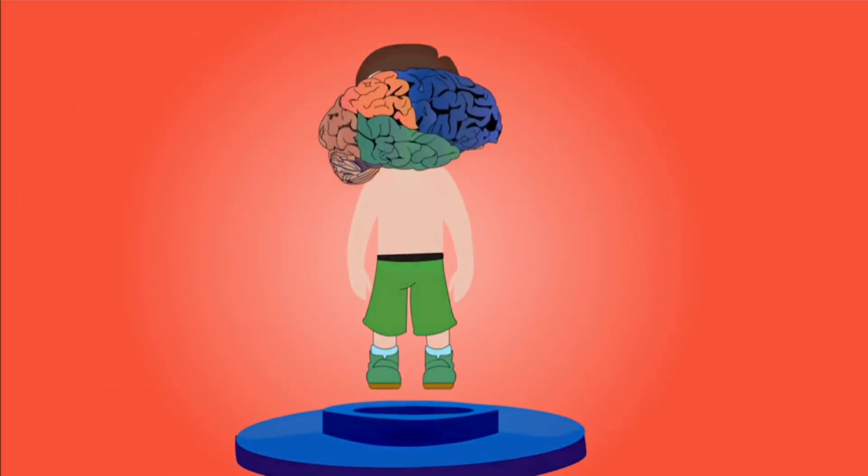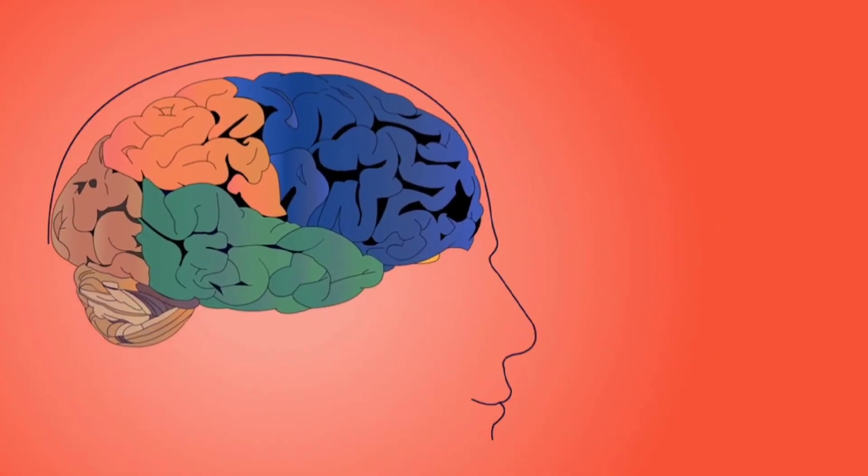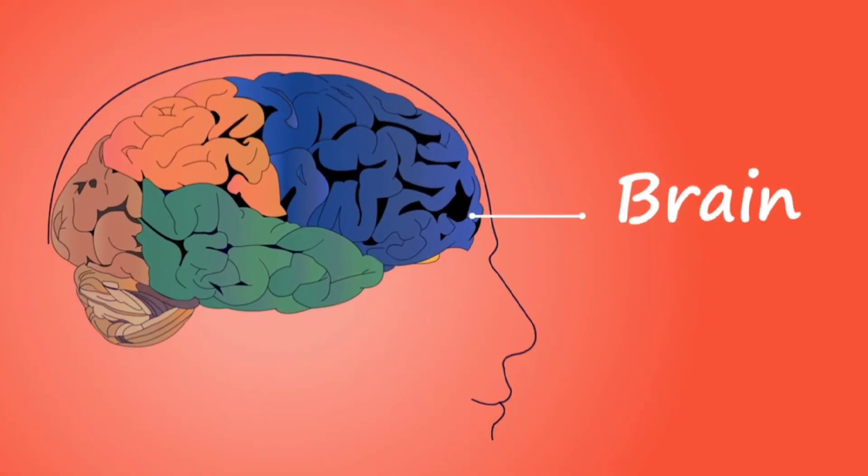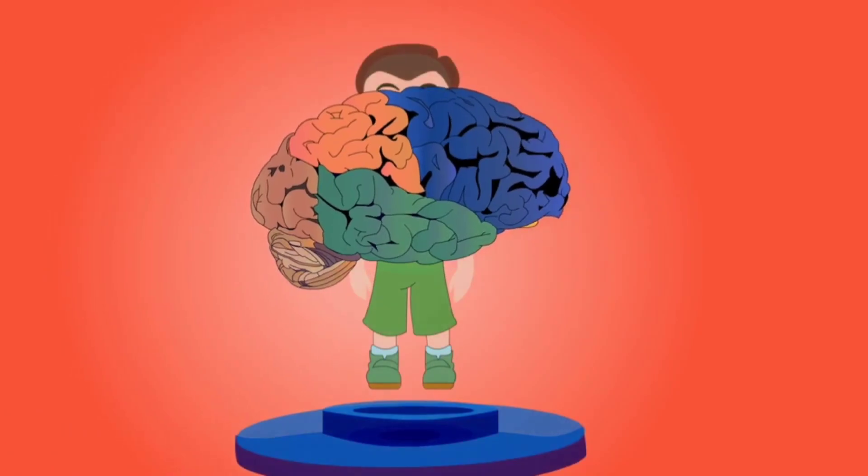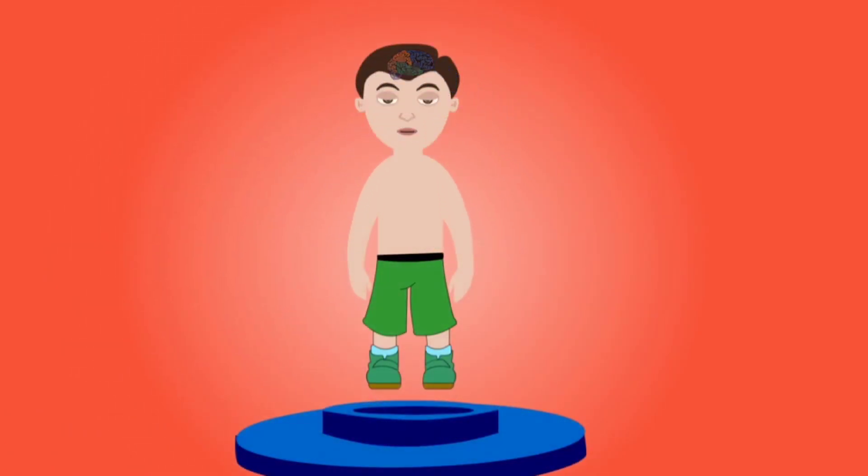The brain is a complex organ that controls thought, memory, emotion, touch, motor skills, vision, breathing, temperature, hunger, and every process that regulates our body.